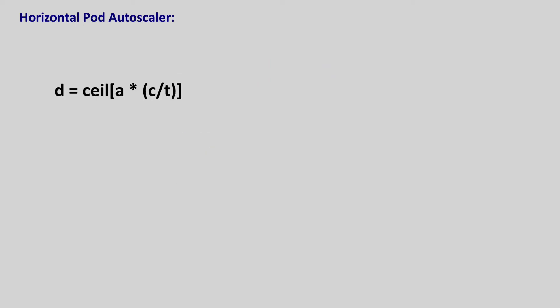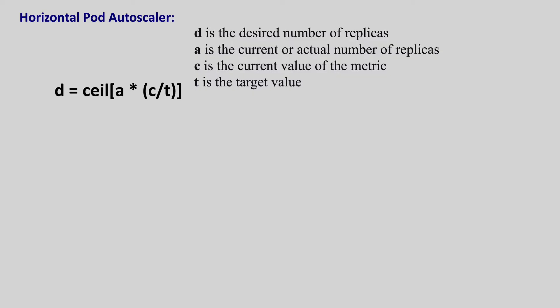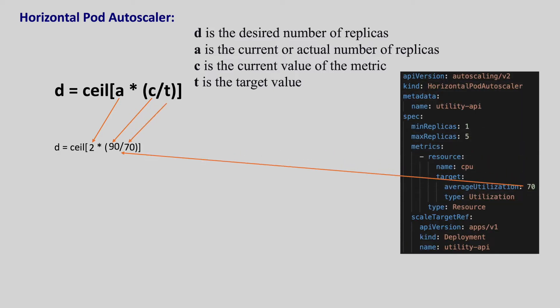HorizontalPodAutoscaler uses a formula to calculate the number of replicas. In this formula, D is the desired number of replicas, A is the actual or current number of replicas, C is the current value of the metric, and T is the target value. For example, if we have a deployment with two pods both consuming 90% CPU on average, but we define to scale when CPU usage is 70%, then for every 15 seconds the HPA calculates the desired number of replicas — which gives three pods. Not only deployments, but we can also scale stateful sets and replica sets with HorizontalPodAutoscaler.